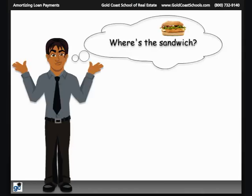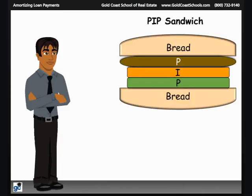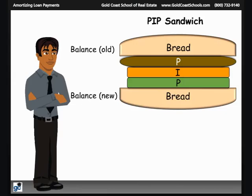Now that we've reviewed the basics, let's talk about that PIP sandwich. Our sandwich is made of two pieces of bread with PIP in the middle. We use a PIP sandwich as a way to help remember the steps to calculate the effect of monthly payments, interest, and principal for an amortized loan. The bread in our PIP sandwich represents the loan balance — B for bread, B for balance.